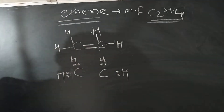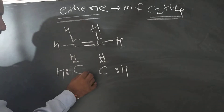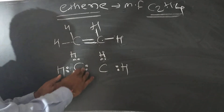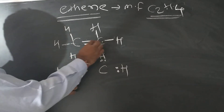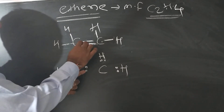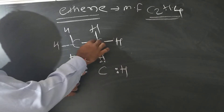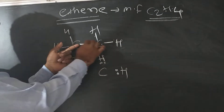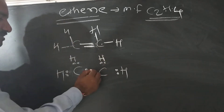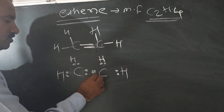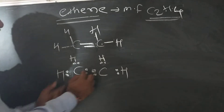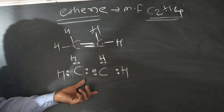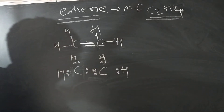Now consider the double bond between the carbons. One bond is formed by sharing one electron from this carbon and one electron from the other carbon. The second bond is also formed by sharing of electrons. So there are two bonds, giving four dots between the carbons. This is the electronic dot structure of ethylene.